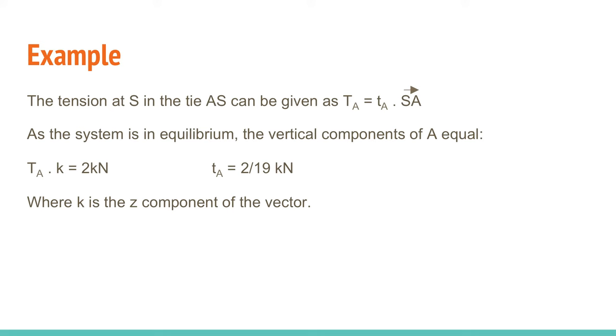The tension at the point S in the tie AS can be evaluated through the following equation. With the system being in equilibrium, we know that the vertical components of A are equal. Therefore, we can find TA to be 2 over 19kN.